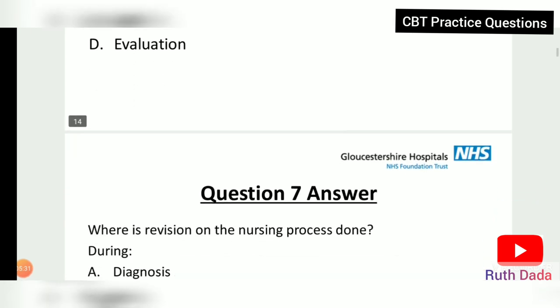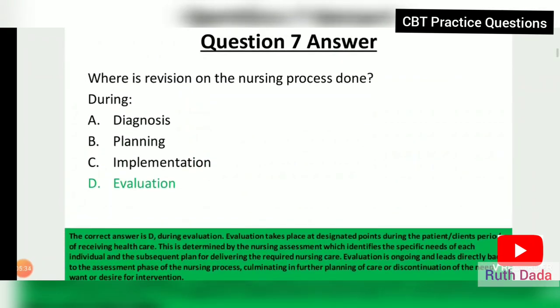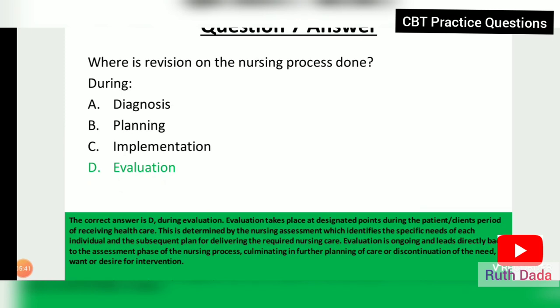Question 7: Where is revision on the nursing process done? During evaluation. Evaluation takes place at designated points during the patient's period of receiving healthcare, determined by the nursing assessment. Evaluation is ongoing and leads directly back to the assessment phase, culminating in further planning of care or discontinuation of the intervention.